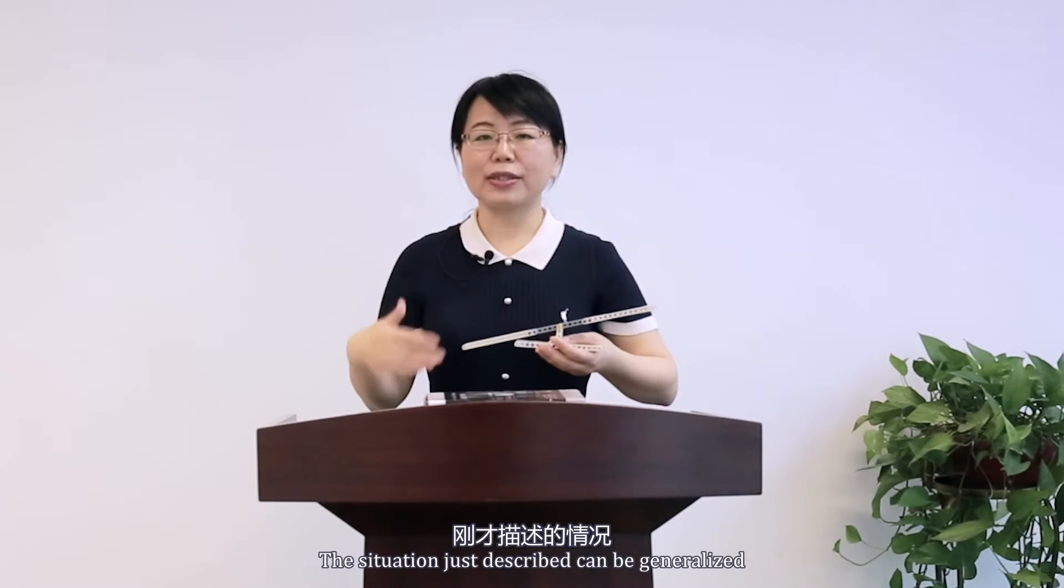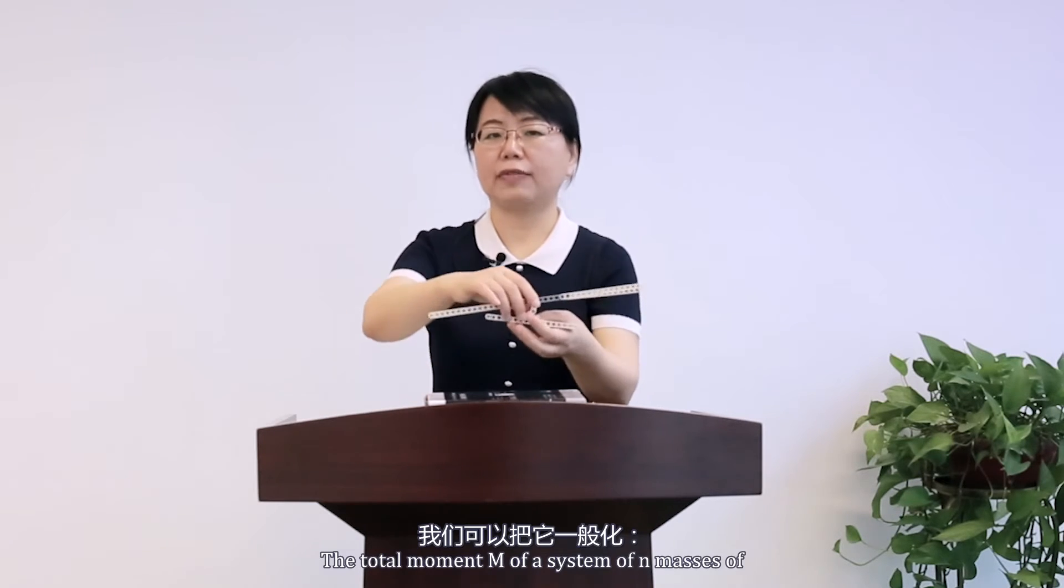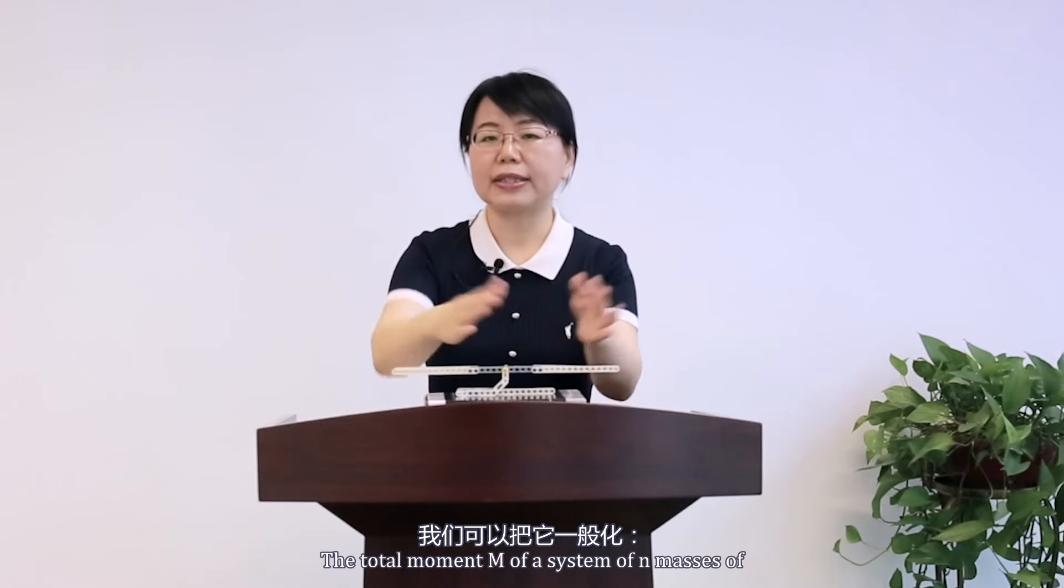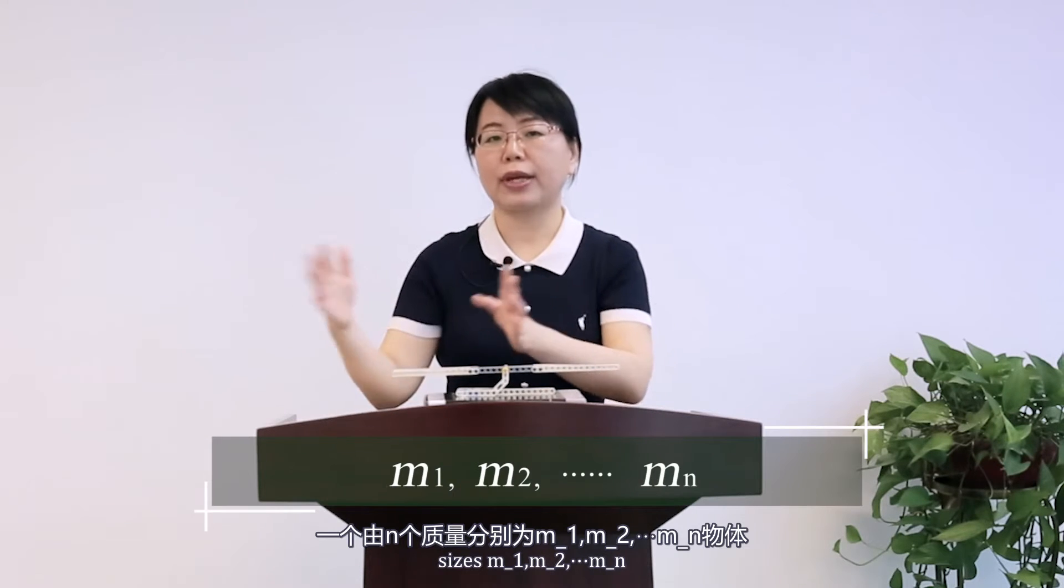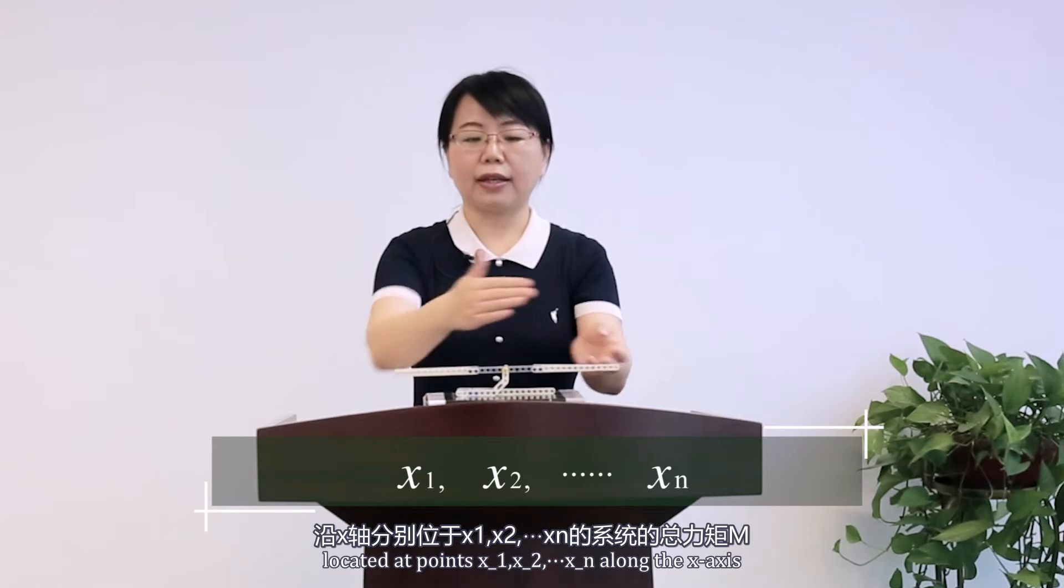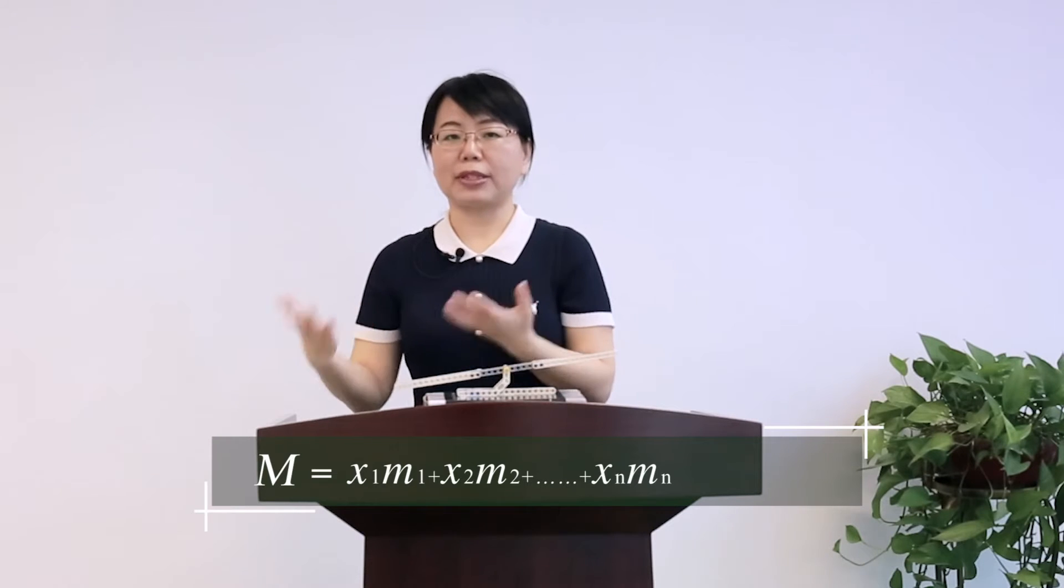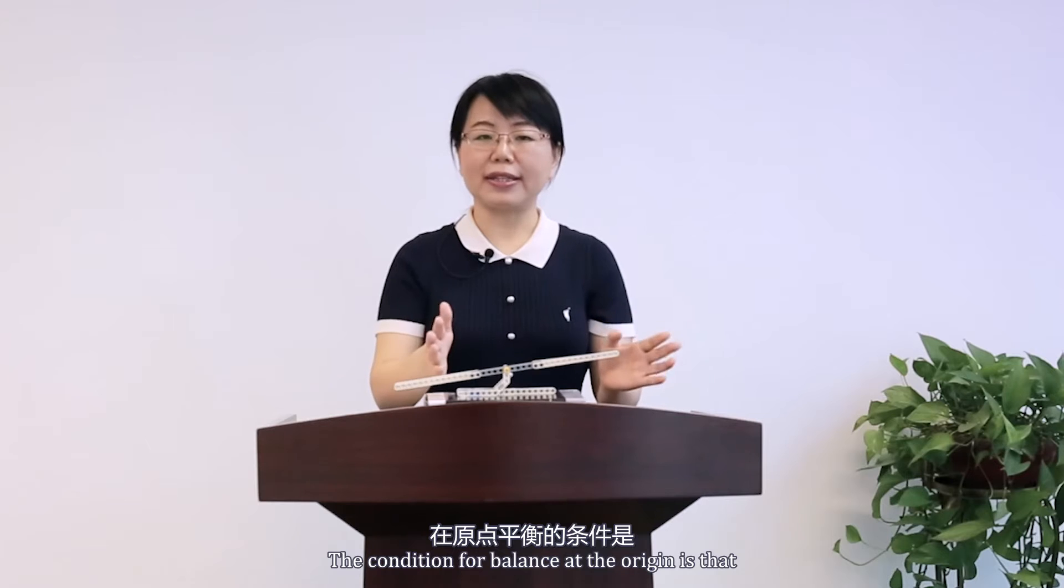The situation just described can be generalized. The total moment M with respect to the origin of the system of n masses of sizes M1, M2 to Mn, located at points x1, x2 to xn along the x-axis, is the sum of the individual moments. That is, the total moment is x1 times M1 plus x2 times M2, and so on. The condition for balance at the origin is that M equals zero.